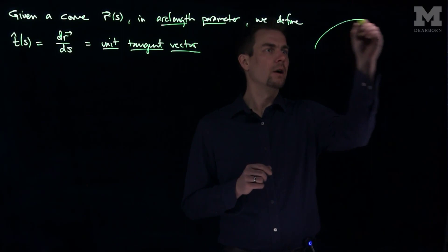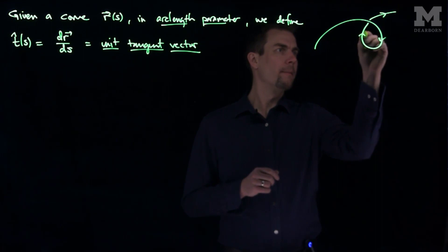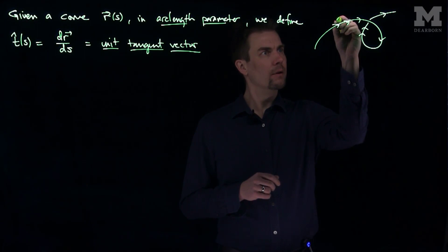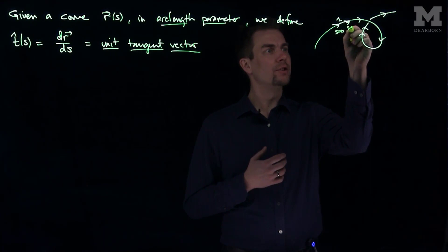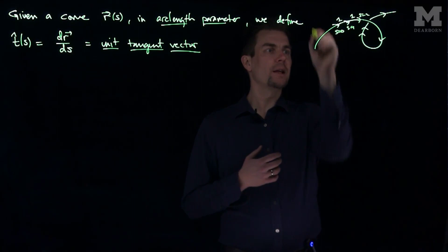So this is the unit tangent vector to a curve. So if we have our curve over here, our space curve, it's an arc length parameter, so every length of part of the curve that has length 1 will correspond to a time step of 1. So this could be s equals 0, and this could be s equals 1.